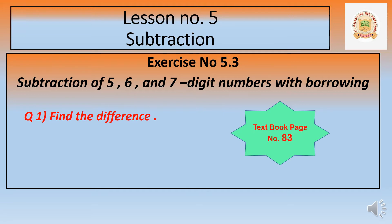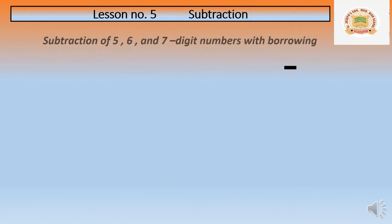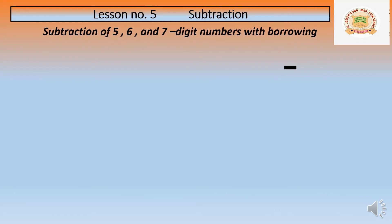Before solving the exercise, let's do two examples to understand this concept. First example: seventy-four thousand three hundred sixty-one minus thirty-six thousand eight hundred ninety-two.